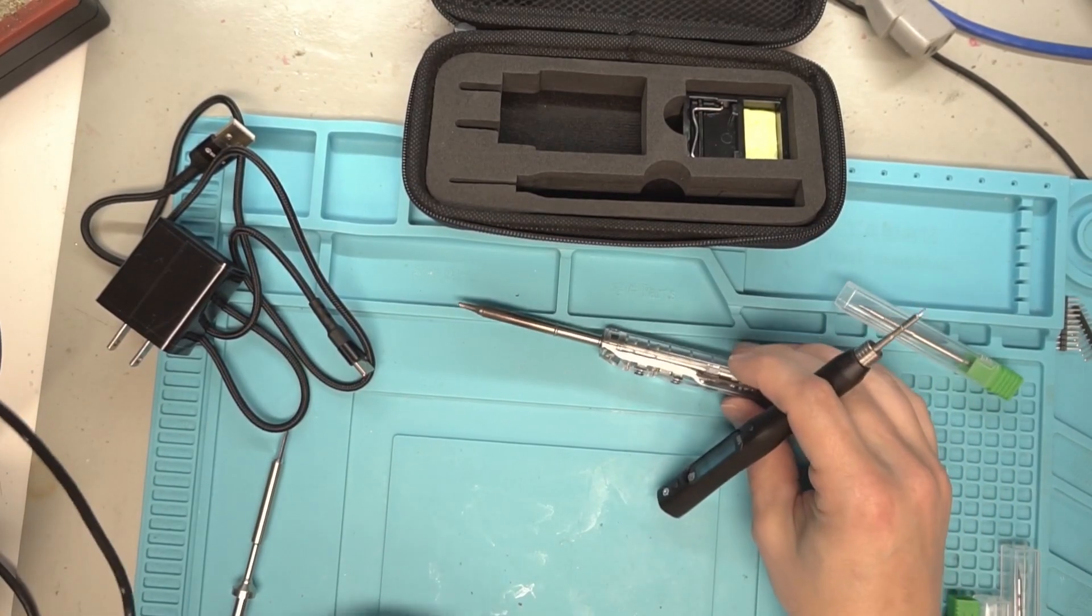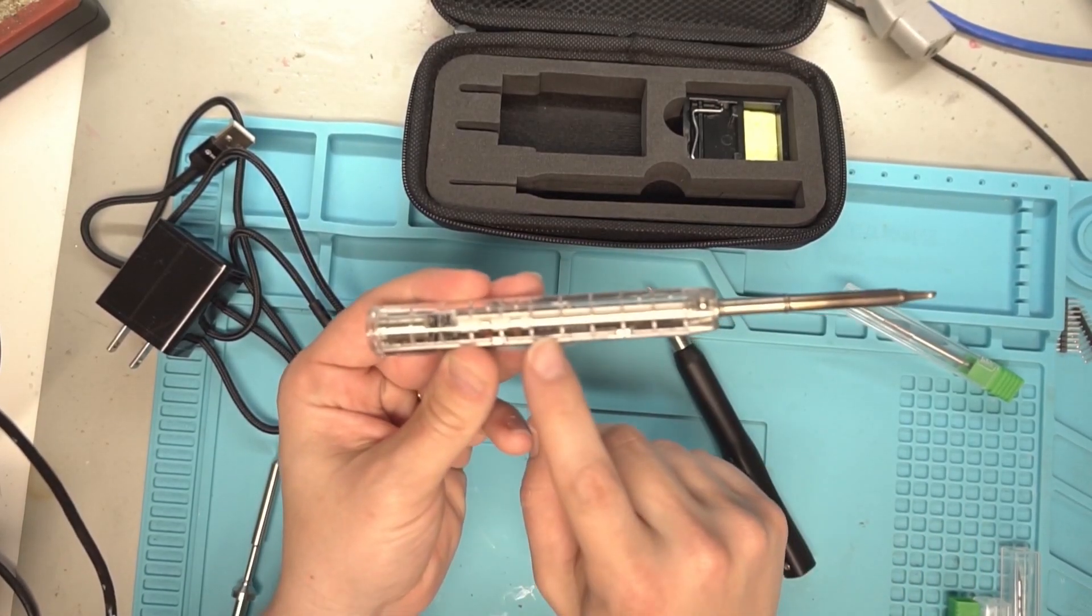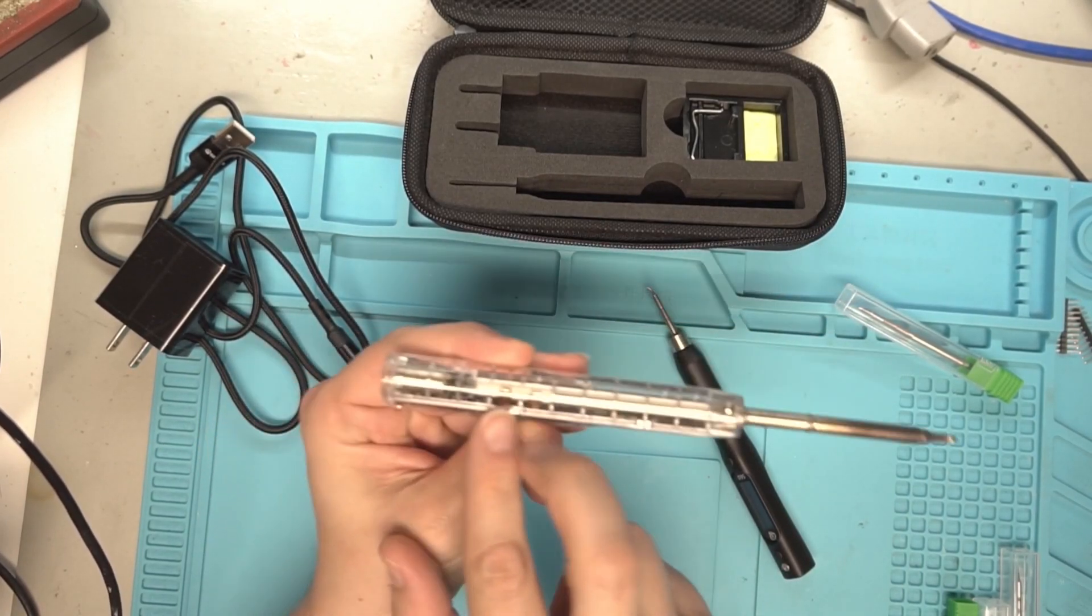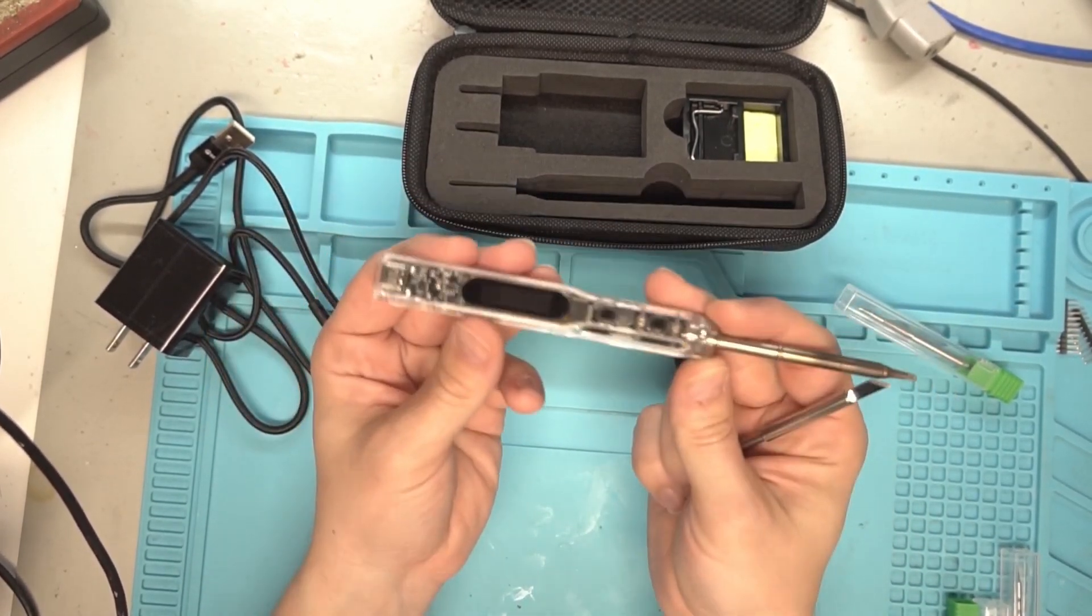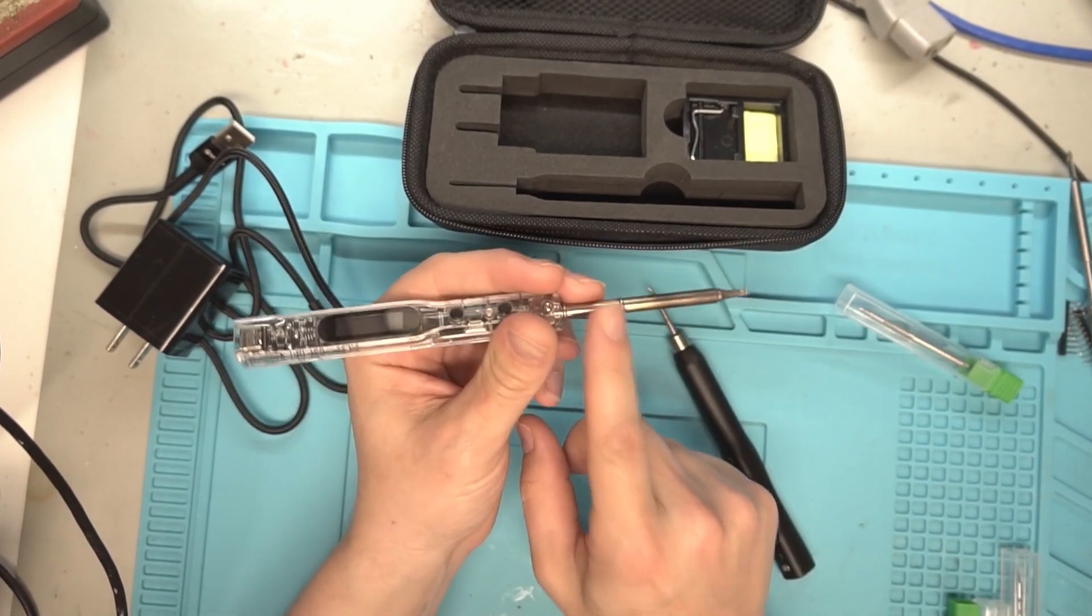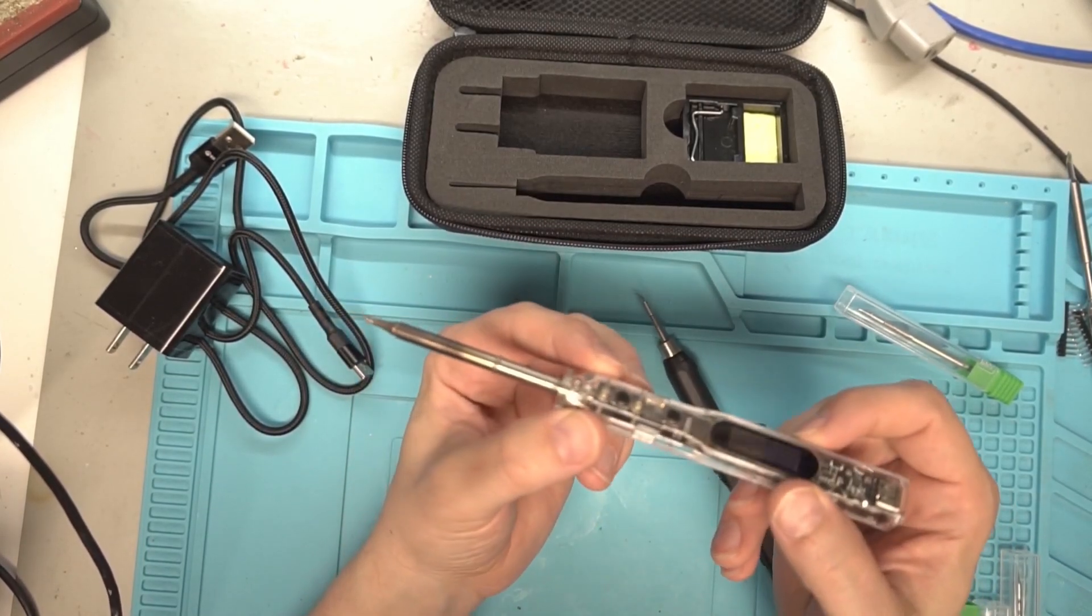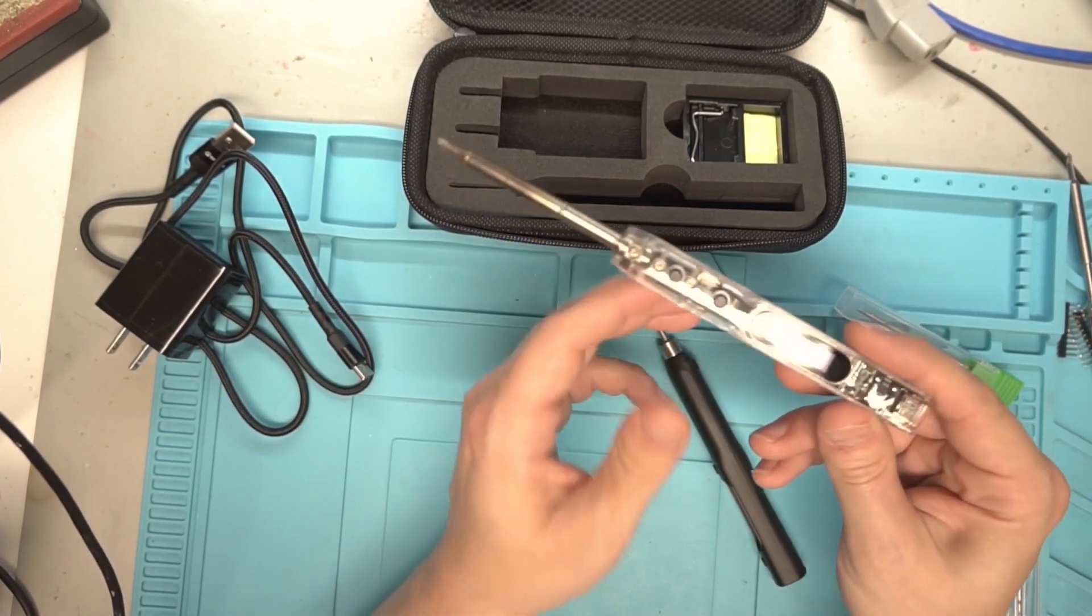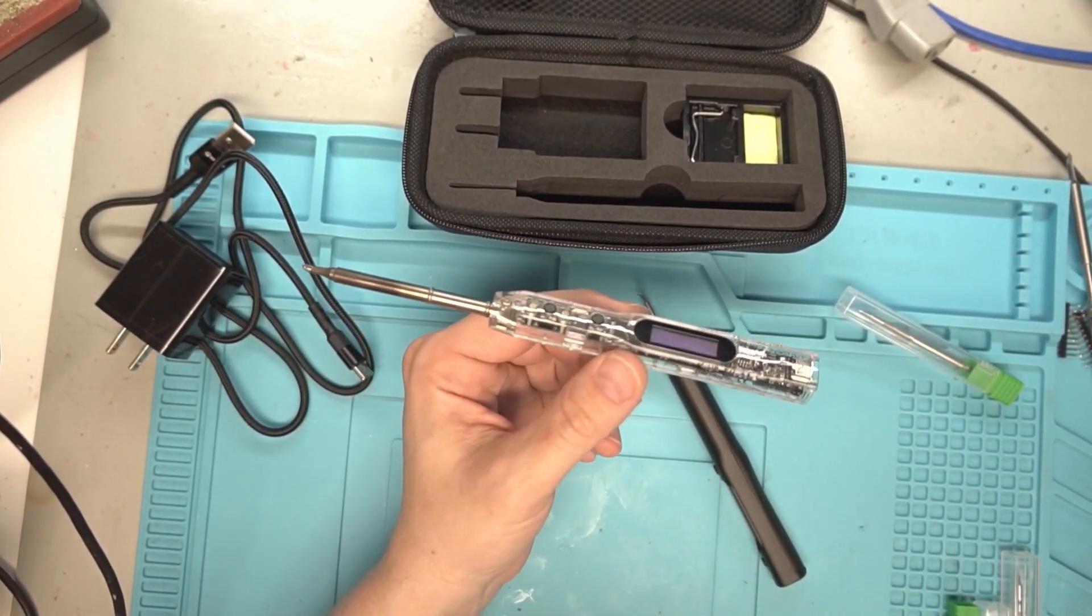First impression here without even turning it on yet, huge improvement over the T12 style one. One of the things that really make these cartridge style soldering irons good are those genuine tips. So I'm a huge fan of having whatever you want to run but actually use the genuine tips on there.